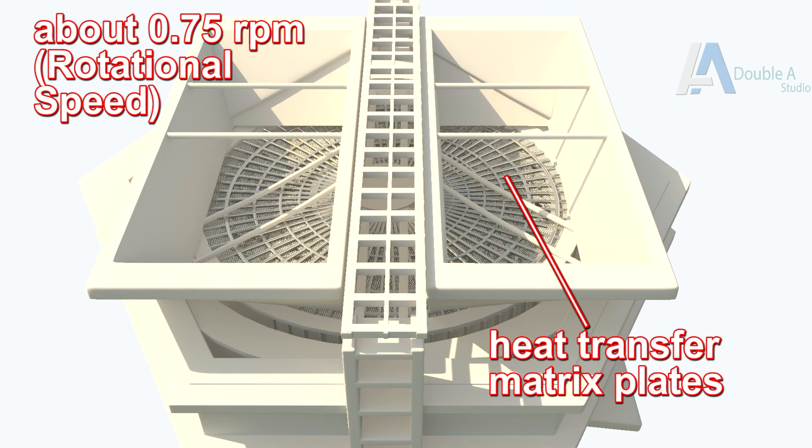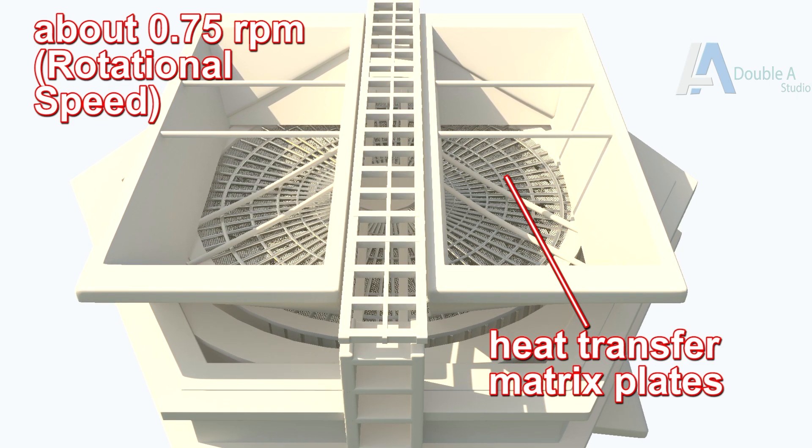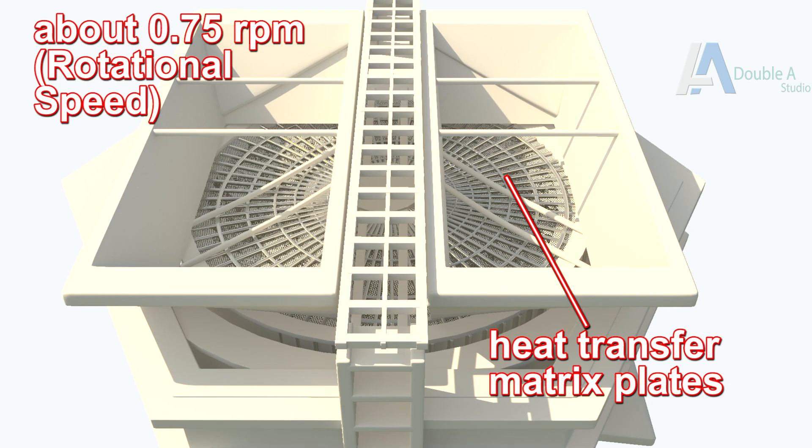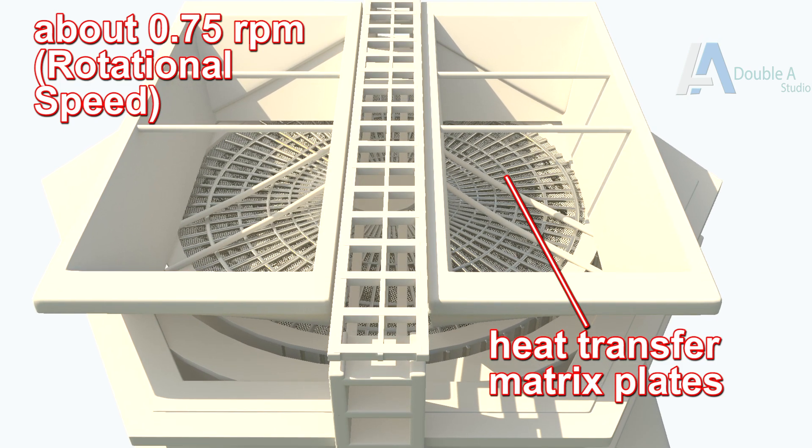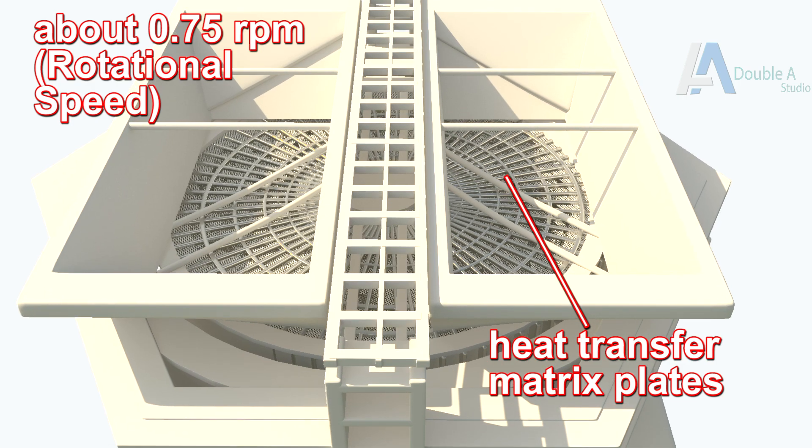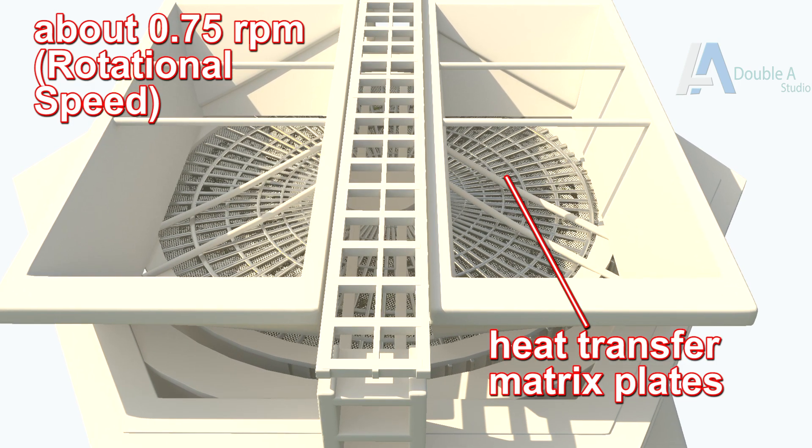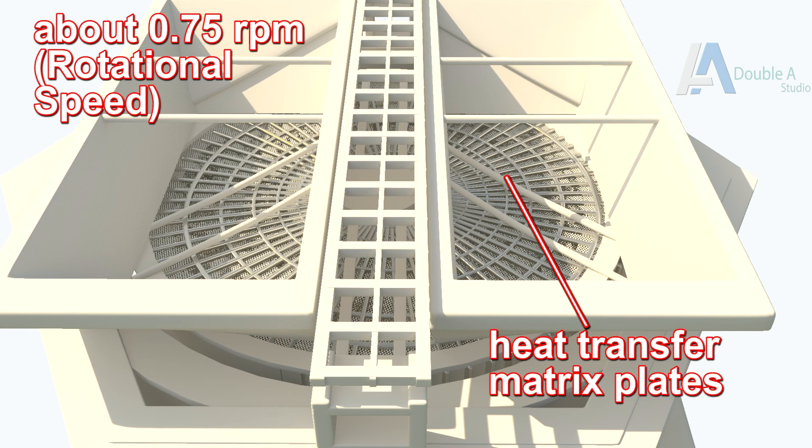Due to rotation, heat transfer plates are exposed to hot flue gas in half of the rotation and to ambient air during other half rotation. That's how heat from flue gas is absorbed by matrix plates in first half and is transferred to air in second half of rotation.